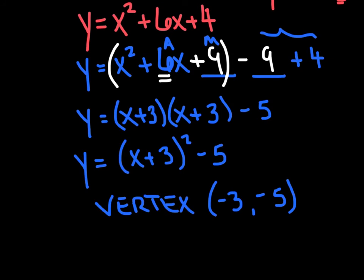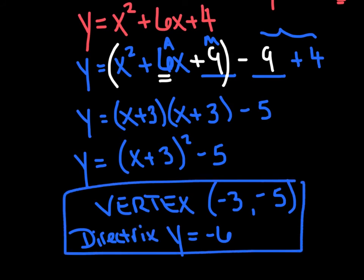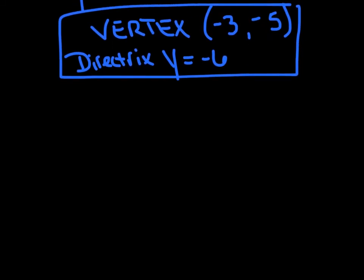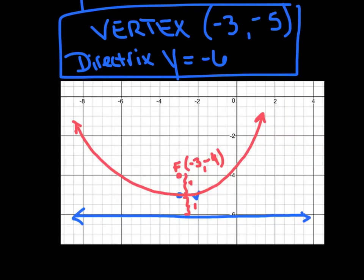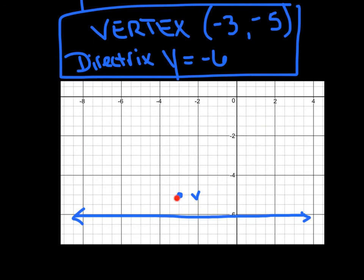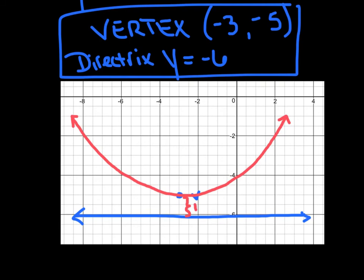The directrix is given as y = −6. Plotting the vertex at (−3, −5) and the directrix at y = −6, the parabola opens upward. The distance between the vertex and the directrix is 1 unit, so going 1 unit above the vertex puts the focus at (−3, −4).